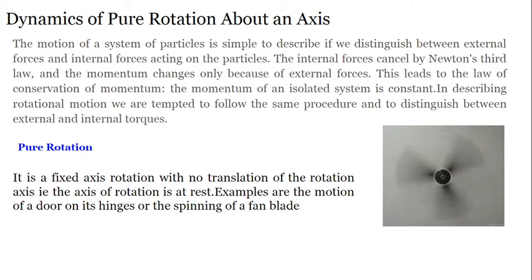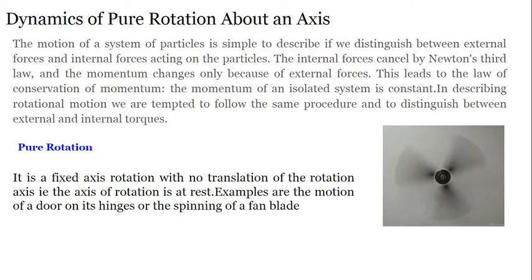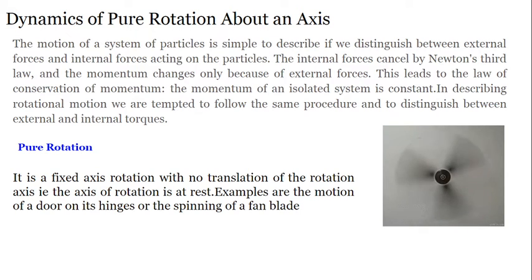Fixed axis rotation is possible. If we consider a car wheel, the car wheel will rotate and that axis will be a straight line — you can consider that fixed axis rotation. Fixed axis rotation is pure rotation when the rotation axis is at rest. For example, consider a fan: the axis of rotation is at rest, so the fan's rotation is a pure rotation. Pure rotations are fixed axis rotations, with the condition that the axis of rotation is at rest.